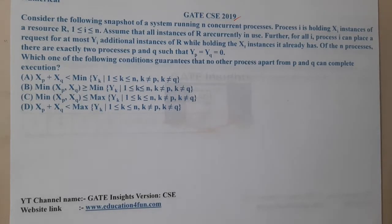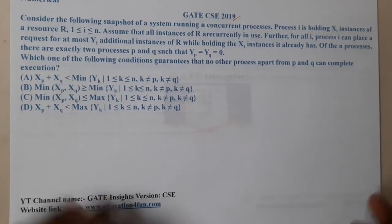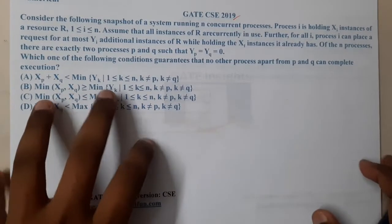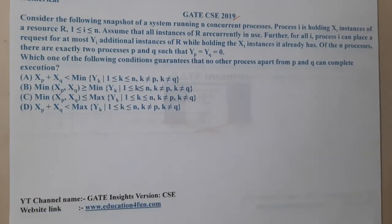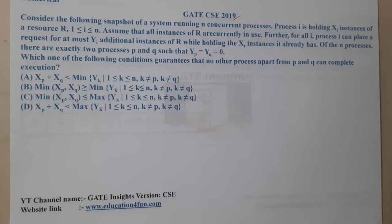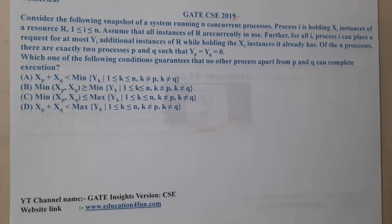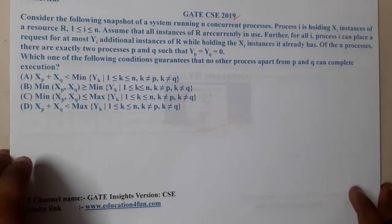Now what exactly is the question saying? Please concentrate. I want to draw some diagrams so that we can understand it better. They did not give a diagram or any representation — they want us to draw the diagram from the information. Process i holds x_i instances of resource R.